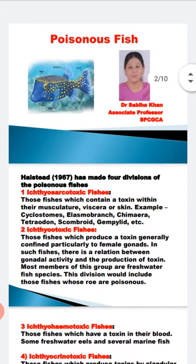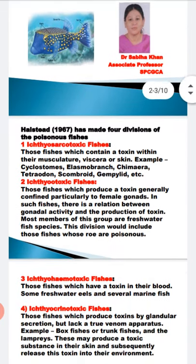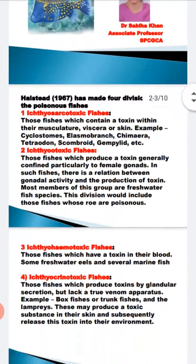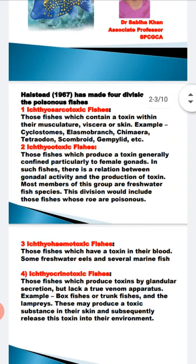The third category is the ichthyohemotoxic fishes — fishes which have a toxin in their blood. Examples are eels and several marine fishes. The fourth category is the ichthyocrinotoxic fish — fishes which produce toxin within their glandular secretion; the secretion of the gland is poisonous, but they lack a true venom apparatus.